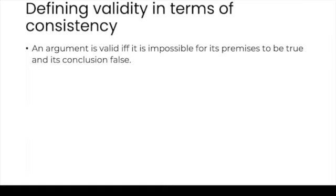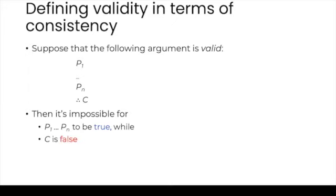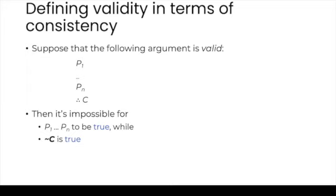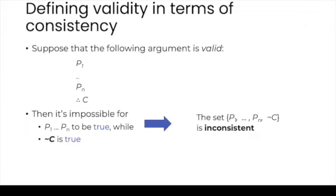Remember that an argument is valid if and only if it is impossible for its premises to be true and its conclusion false. Suppose that an argument with premises P1 through Pn and conclusion C is valid. Then it's impossible for the set of premises P1 to Pn to be true while C is false. Since a sentence is false if and only if its negation is true, we can reformulate this: if the argument is valid, then it is impossible for the set comprised by the premises and the negation of the conclusion to all be true simultaneously.